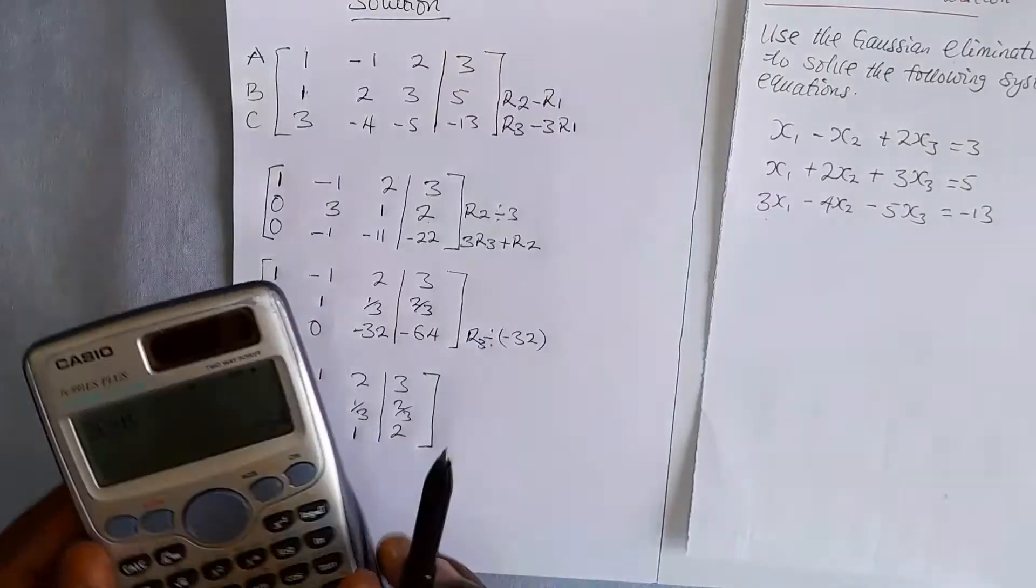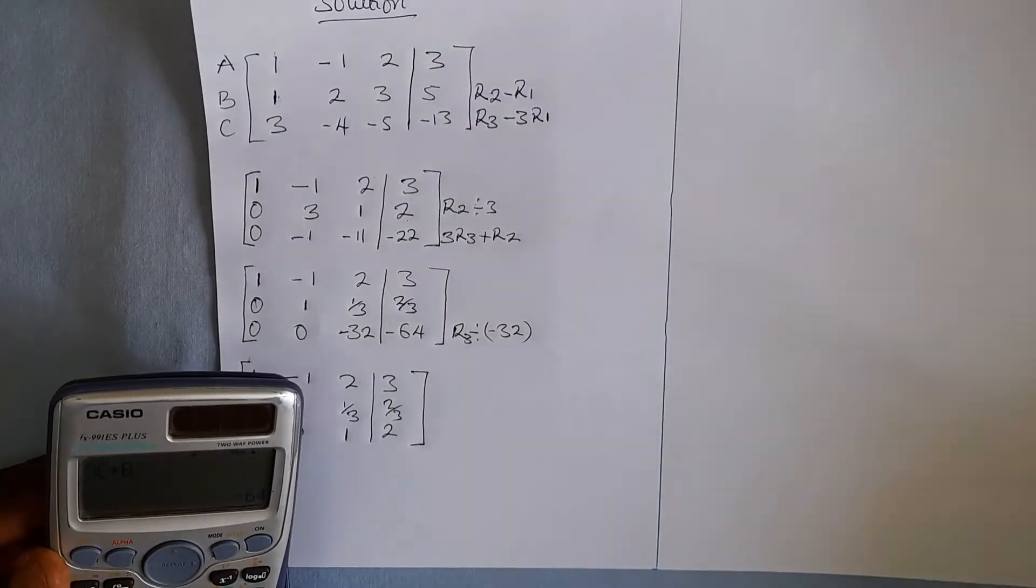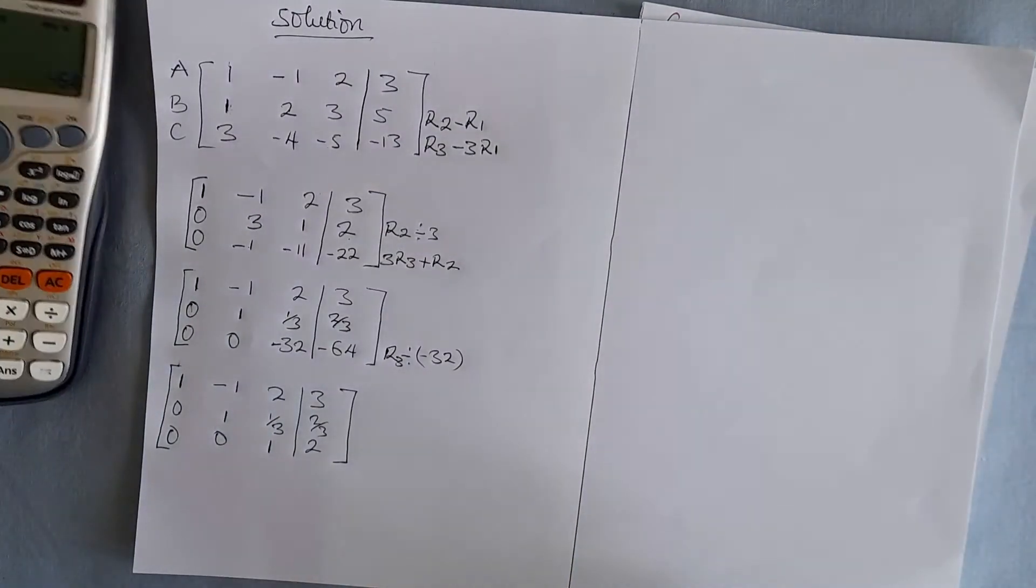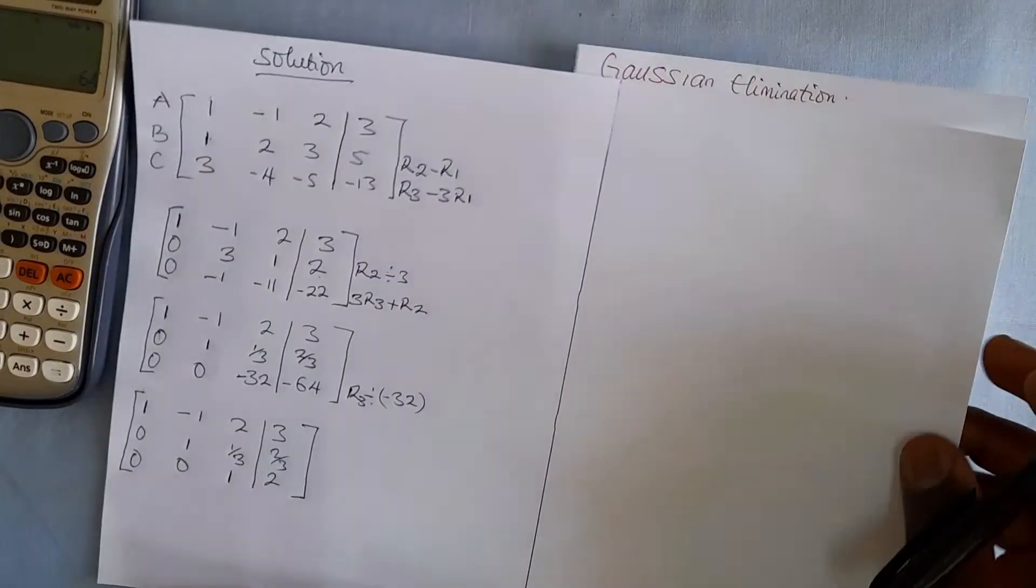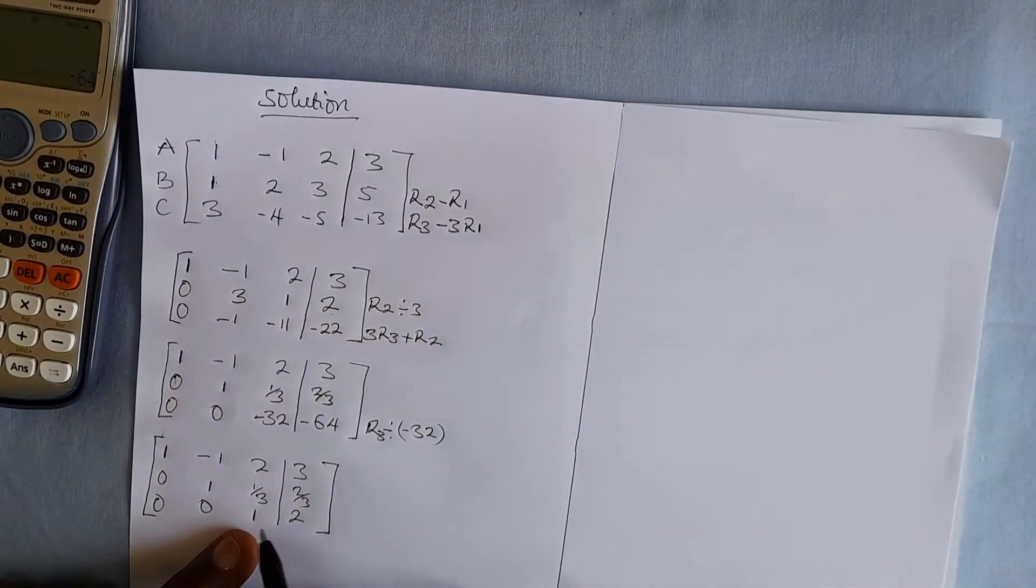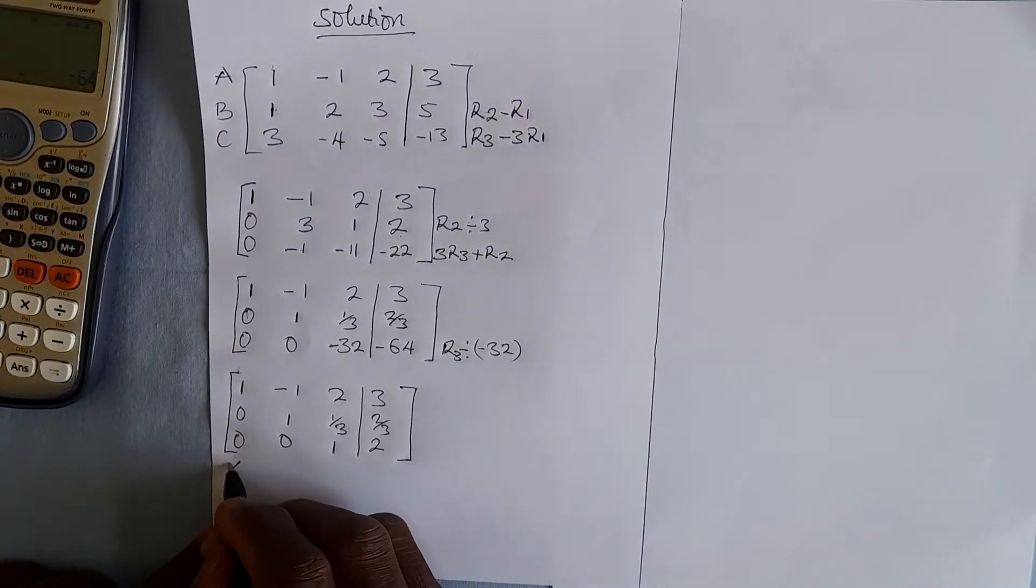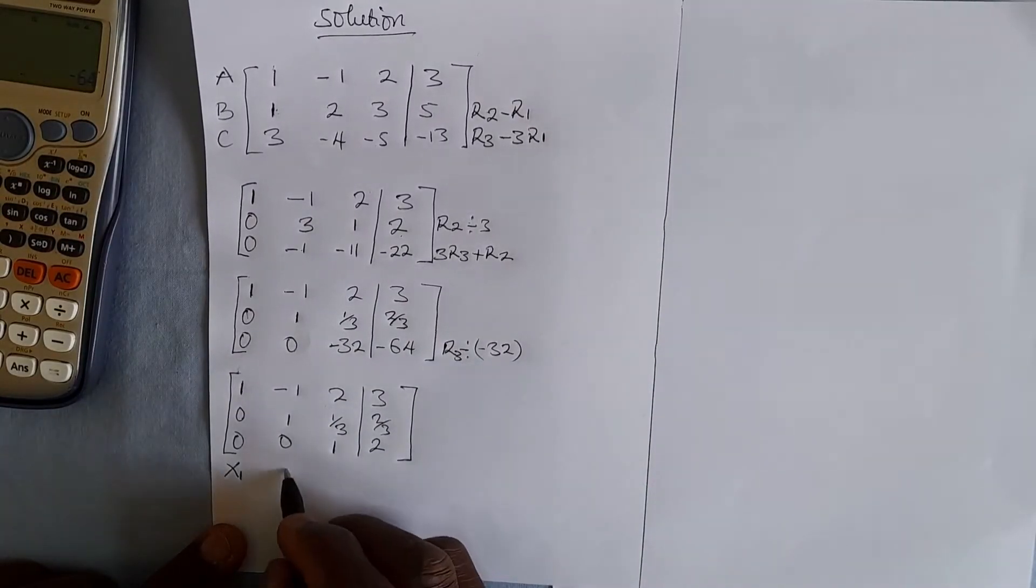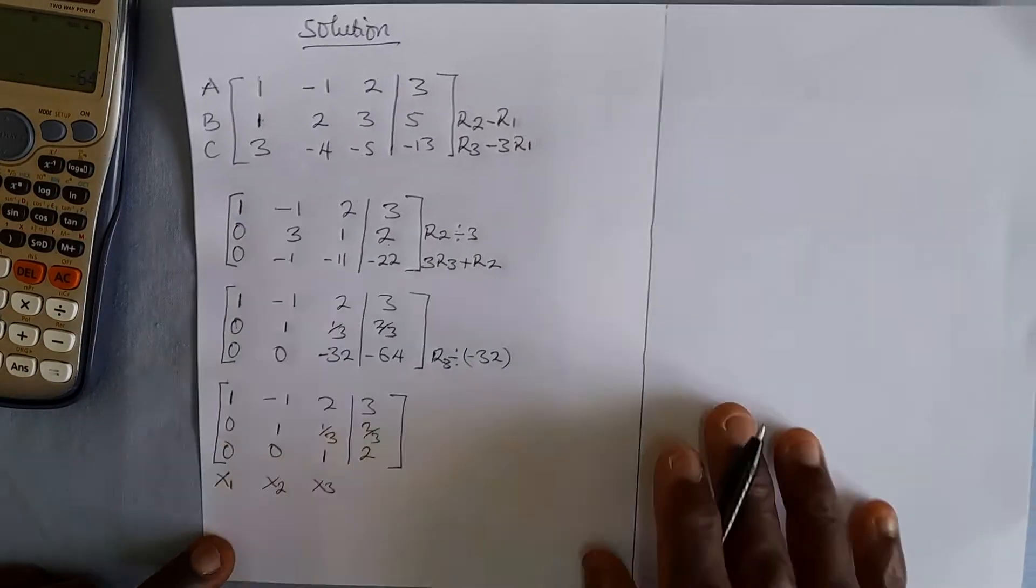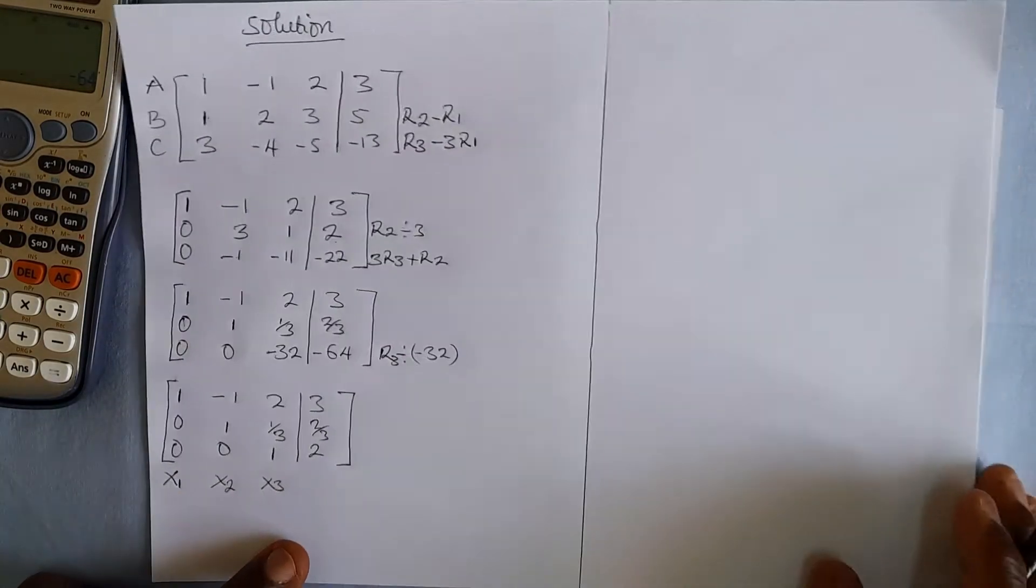Now we proceed with the next thing, which is backward substitution. And to do that, we can substitute in. I must mention here that this is the value for x1, here is for x2, and here is for x3. So we are going to take this.